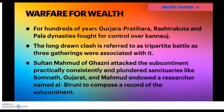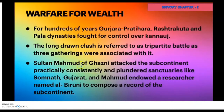Warfare for wealth — for hundreds of years, the Gurjara Pratihara, Rashtrakuta, and Pala dynasties fought for control over Kanauj. This long-drawn clash is referred to as the tripartite battle, meaning three groups were associated with it. Sultan Mahmud of Ghazni attacked the subcontinent repeatedly and plundered temples like Somnath, Gujarat. Sultan Mahmud also employed a researcher named Al-Biruni to compose a record of the subcontinent.